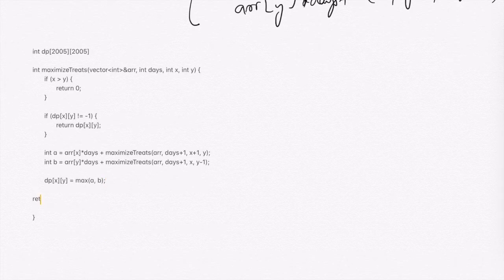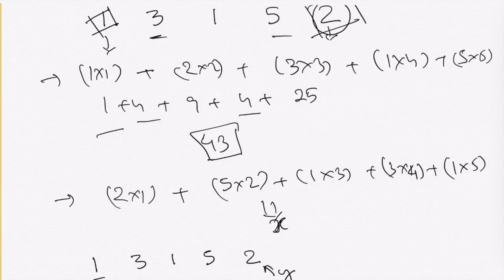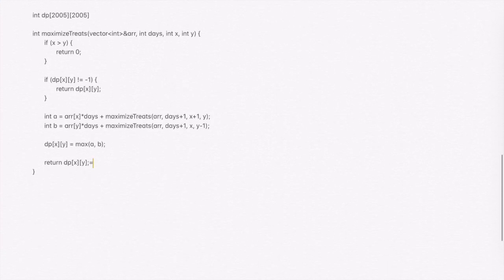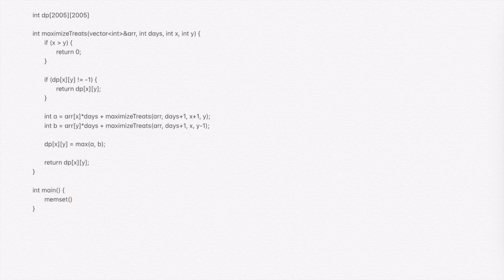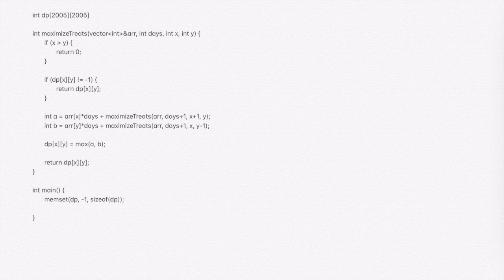Then dp[x][y] = max(a, b), and we return dp[x][y]. In the main function, we first initialize all elements of dp to -1, since -1 serves as the identifier indicating that a particular state (x, y) has not yet been solved.